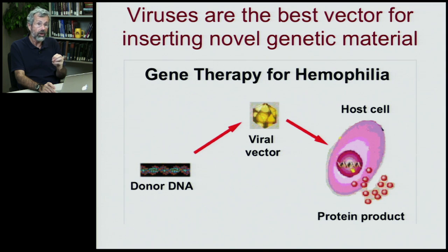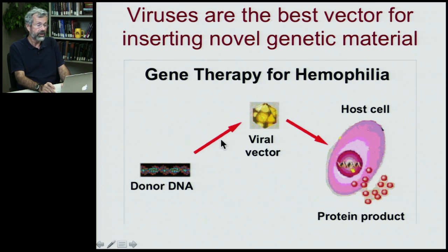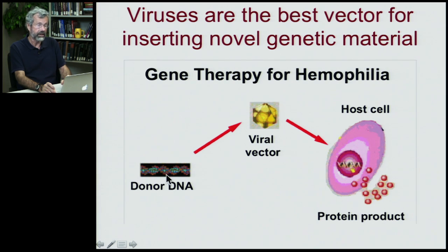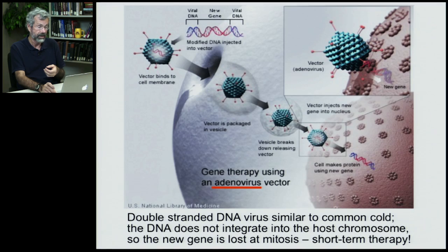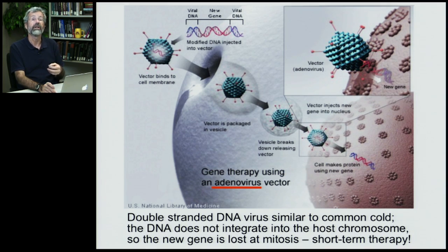Viruses we can also try to harness because they're so good at penetrating a human organism or any other host — we can again insert something into the viral genome and try to get it into a host. There are plans to do gene therapy for hemophilia, which has that mutation that prevents blood from clotting properly. And if you have a donor DNA that will ensure healthy clotting of the blood, insert that into the genome of a virus and then have the virus infect host cells — that could integrate a healthy gene into a host cell, getting the necessary protein for healthy blood. So far, this is in the very early phases and there are a lot of different ideas about how to approach this kind of viral vector.